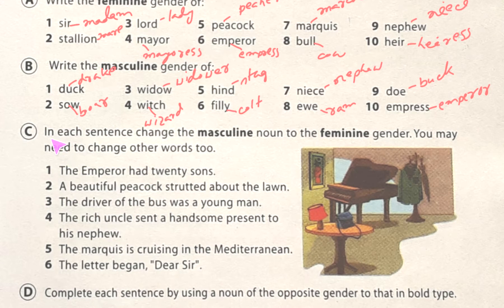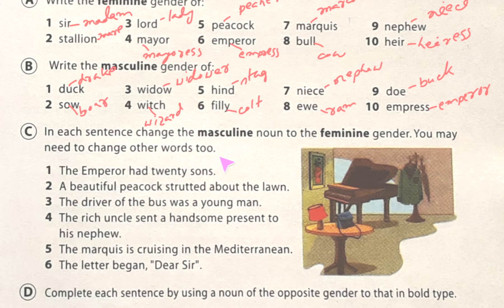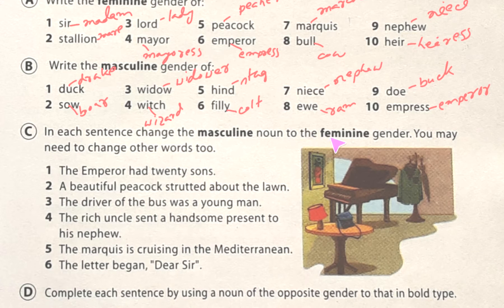Exercise C: in each sentence, change the masculine noun to the feminine gender. You may need to change other words too. Let's do it. Sentence one: 'The emperor had 20 sons.' Here we have emperor and sons — both are masculine, so we need to change these two words.